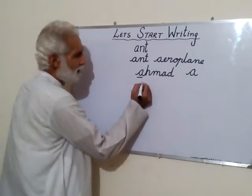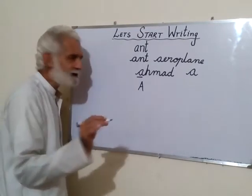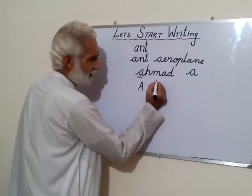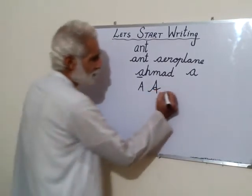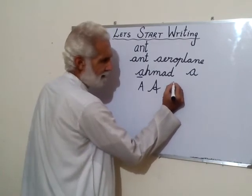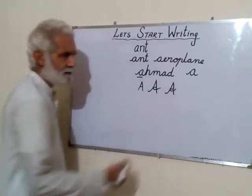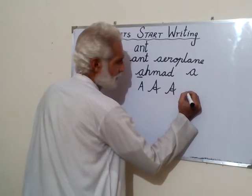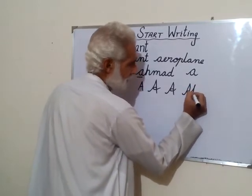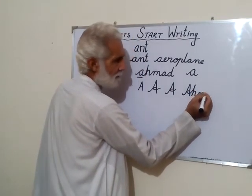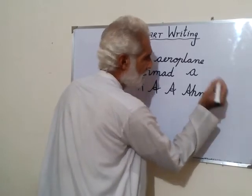How will we write capital A in joining, cursive writing? It's very simple — look at my hand. It comes down, then I go up from the center, turn, and this is capital A. Take a slanting line up, come down, move along this line, and turn from here — this is A. When we write Ahmad, we turn from here, come down, go up, start H, come down, then M, then C for A, and finally D. Ahmad.